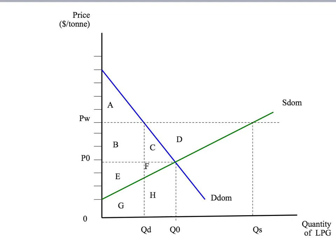Let's start by thinking about area B. Before international trade, consumers were consuming Q0. After international trade, they consume QD — these are units that consumers were buying before trade and are still buying after. But the difference is that they're buying those QD units at a higher price, PW rather than P0. So area B represents the increased price consumers pay on the LPG they bought before and after trade was allowed. This is simply an increase in price — area B is just a straight transfer from the buyers to the sellers.